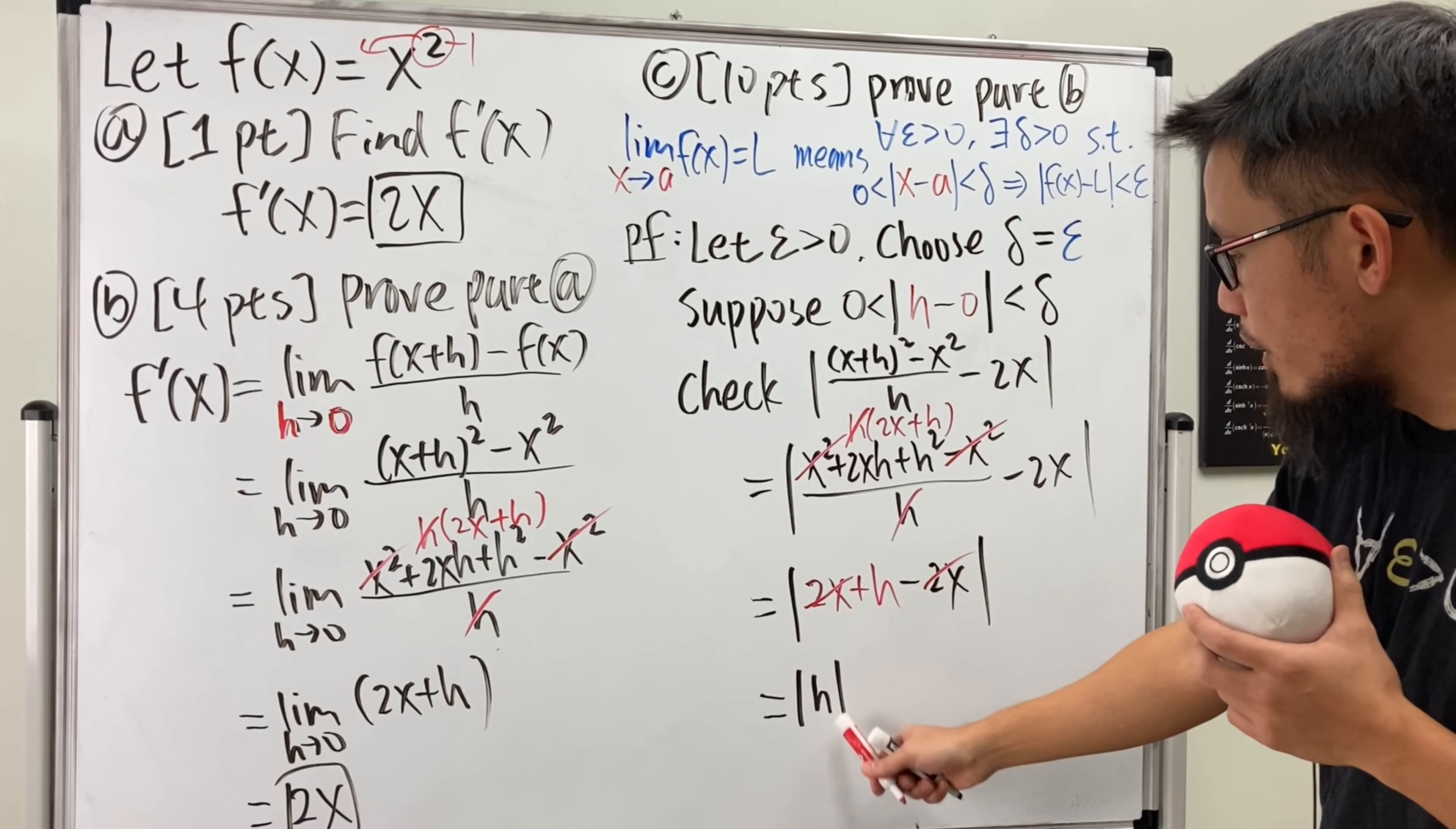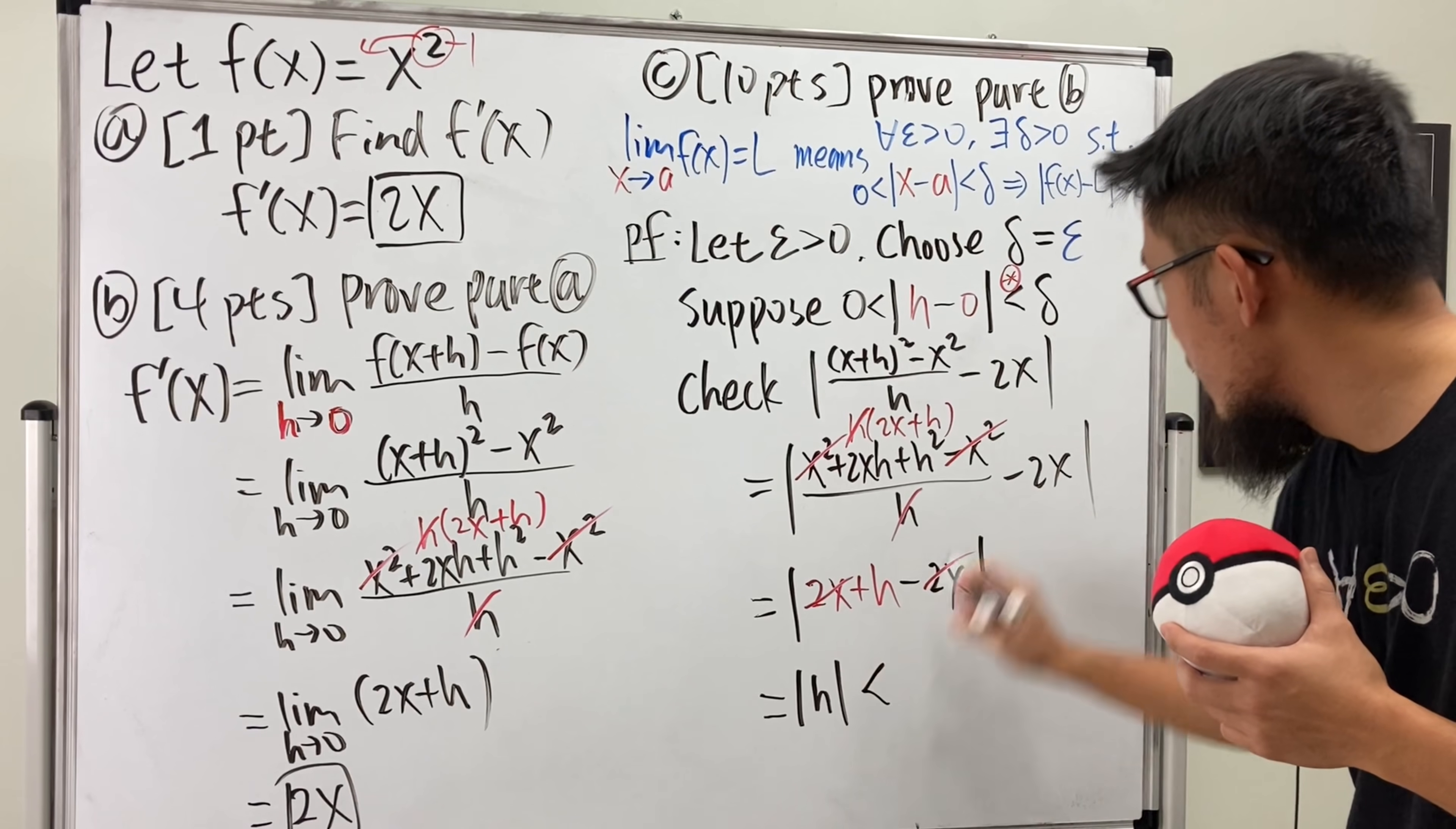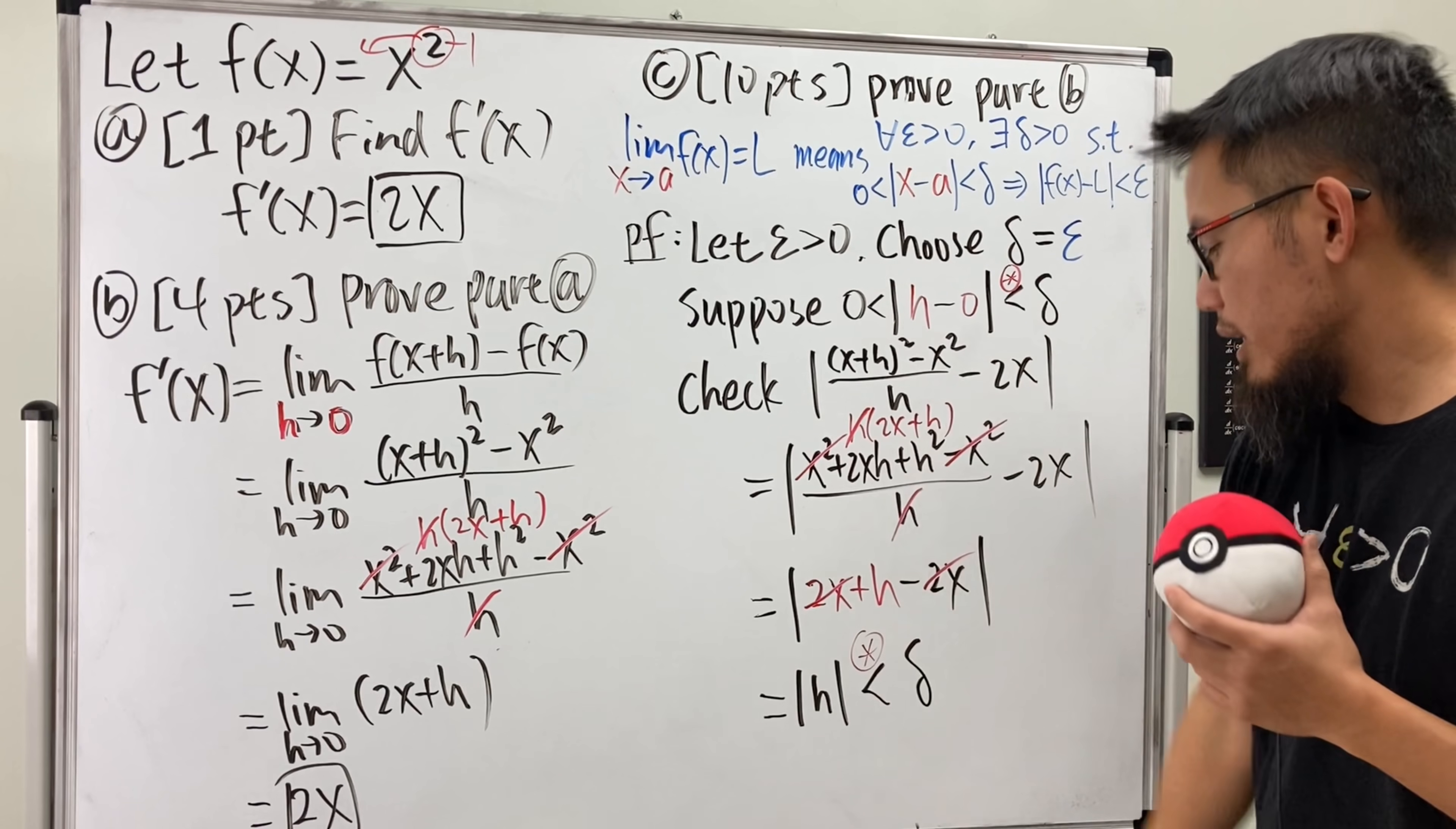Have a look. First, the absolute value of h. And I'm actually going to put down a star right here. This right here is less than delta. Why? Because we have this assumption that we can use.